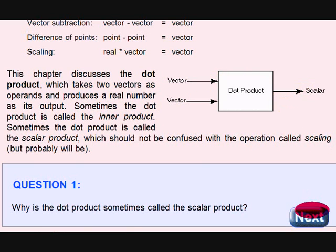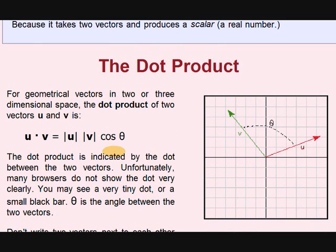For geometrical vectors in two or three-dimensional space, the dot product of two vectors U and V is U dot V. That is equal to modulus U into modulus V into cos theta. That is the angle between U and V.